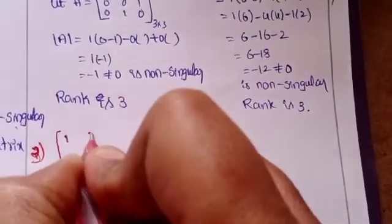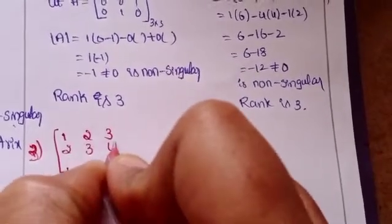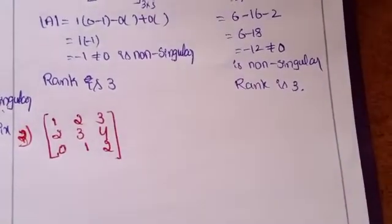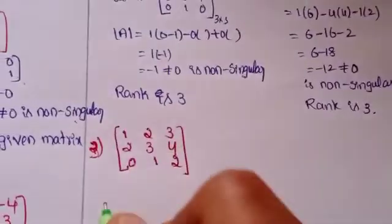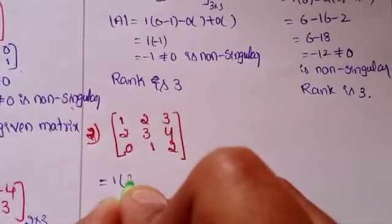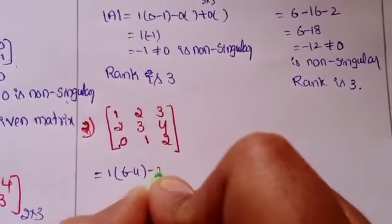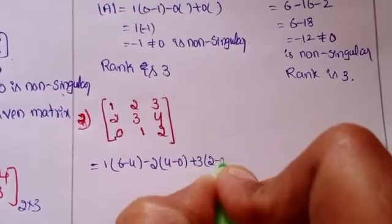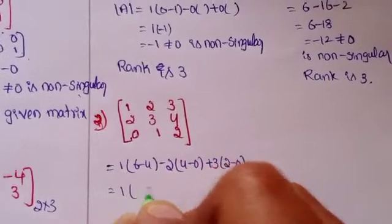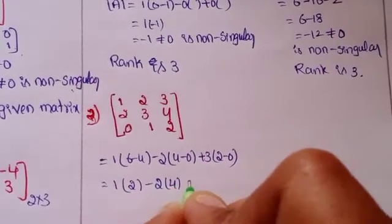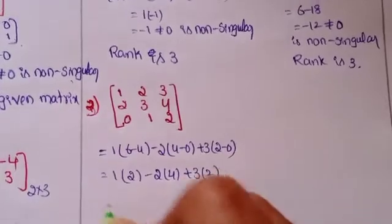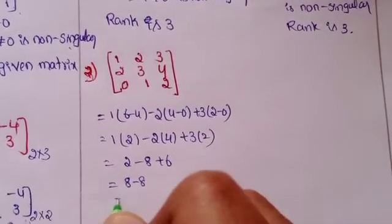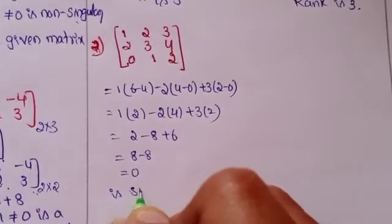For the third problem, matrix A equals 1, 2, 3 / 2, 3, 4 / 0, 1, 2. The determinant is 1 into (6 minus 4) minus 2 into (4 minus 0) plus 3 into (2 minus 0), giving 2 minus 8 plus 6 = 0. So it is a singular matrix.